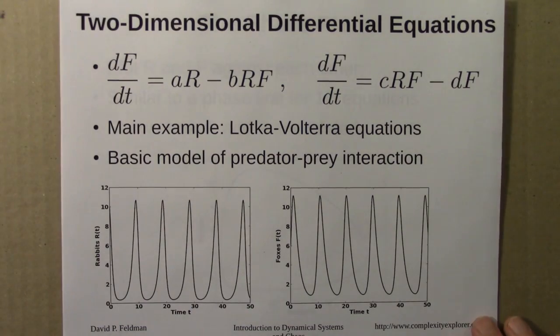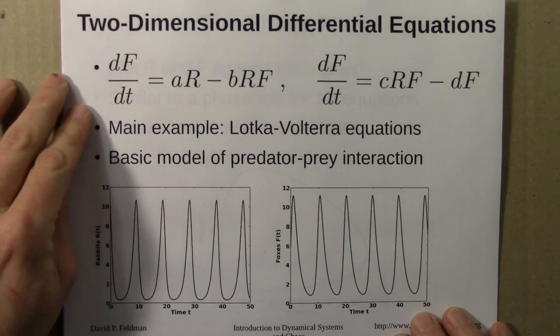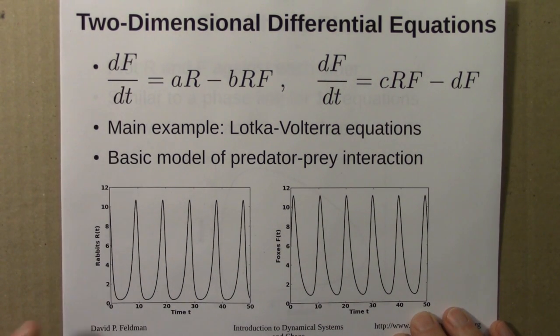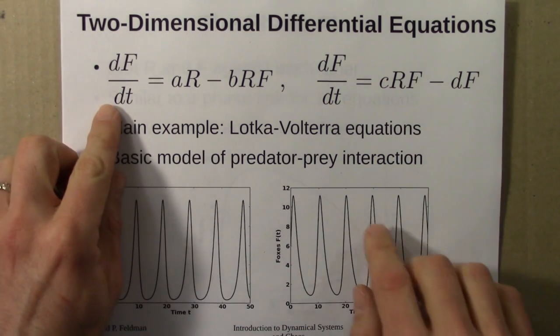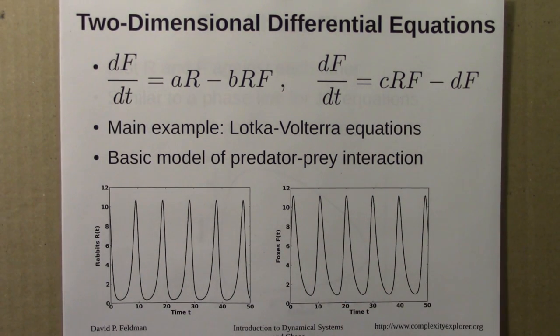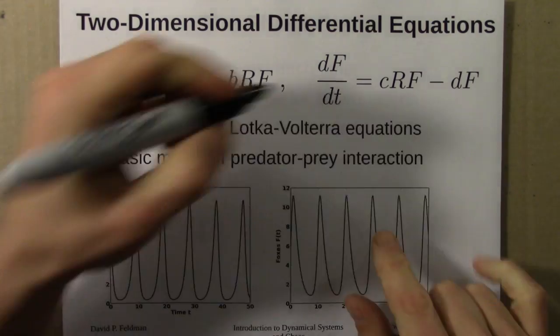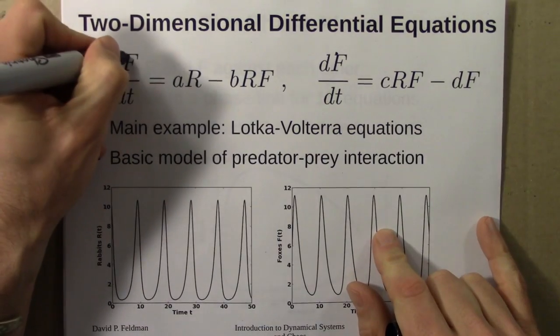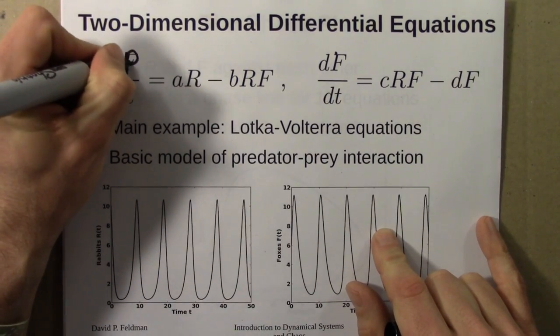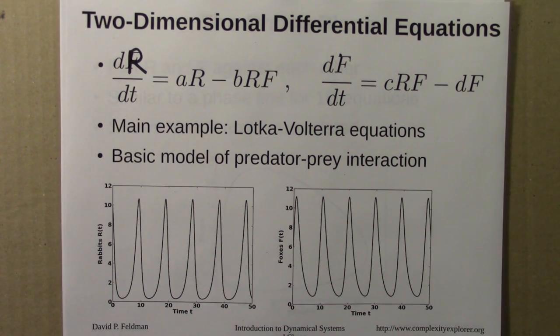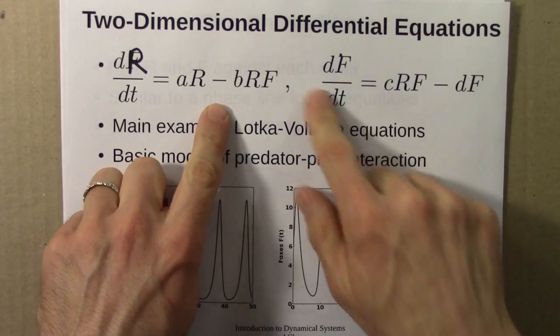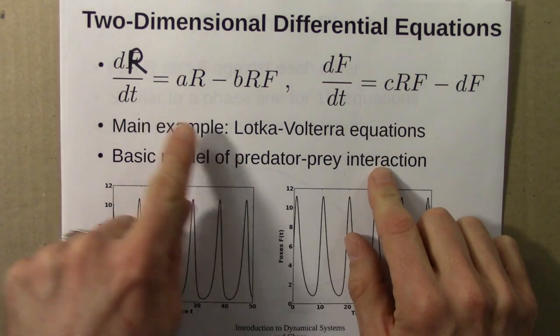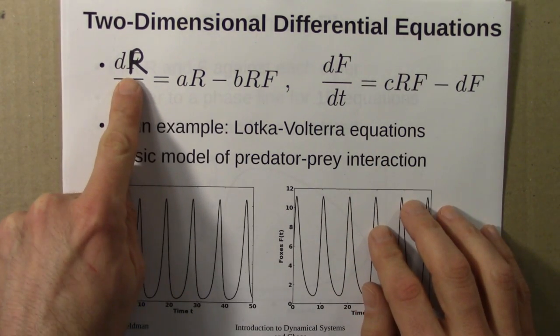So I started by introducing the Lotka-Volterra equation. This was the main example of a two-dimensional differential equation. So we have two equations, that should be an R for rabbits. Good thing I noticed that. So we've got two differential equations keeping track of two variables, R and F.